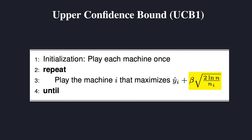Let's round this video up with a little example exercise and see what UCB1 would choose for one time step. Let's say we have three bandits or machines — bandit 1, 2, and 3. We have played bandit 1 six times and gotten these rewards. Machine 2 was played two times with rewards of 8 and 12. Bandit 3 was also played two times with rewards of 5 and 13. And beta is set to 1. The question is: which bandit would UCB1 choose? You can pause the video and try for yourself first.